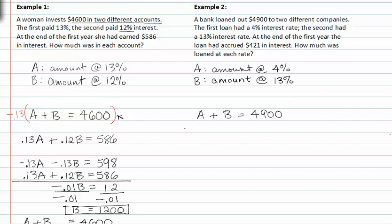We also know that at the end of the first year, the loan had accrued $421. So the interest rate times the amount of A plus the interest rate times the amount of B is equal to this total interest.